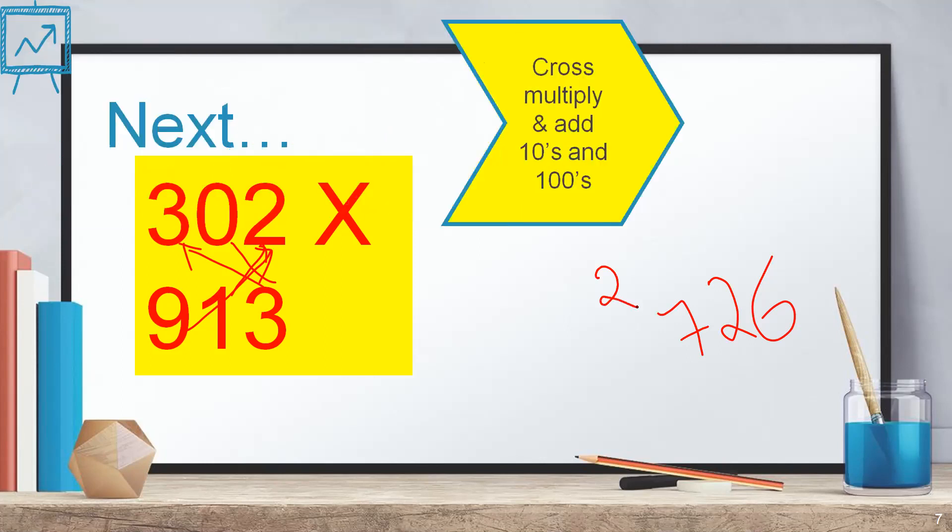Next step is cross-multiply and add 10s and 100s. That is 10s is 1 into 3 and 9 into 0. 1 into 3 is 3 and 9 0s are 0. So you'll be getting 3 only here. Right?